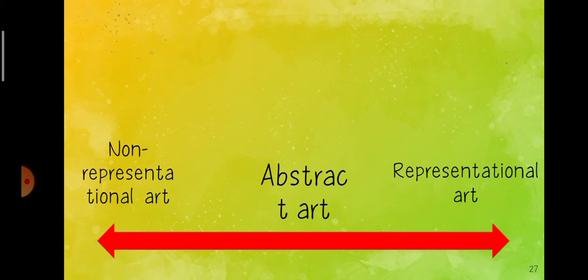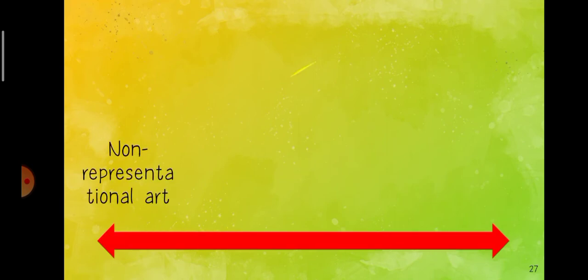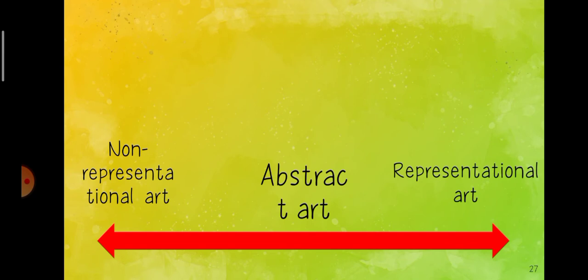When an artist works in abstraction, they are distorting the view of a known thing, person, or place. For example, a landscape could be abstracted — going from representational to abstract, or from non-representational to abstract using only shapes and colors. The difference between them is less — they are similar in range.